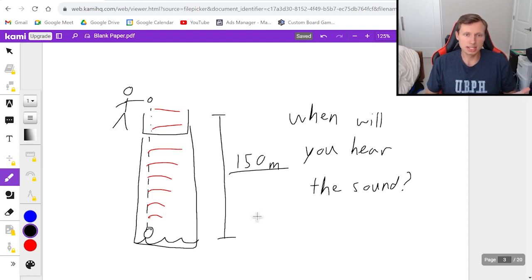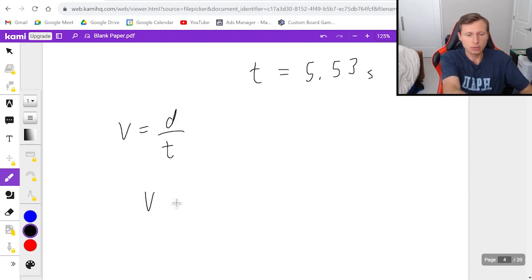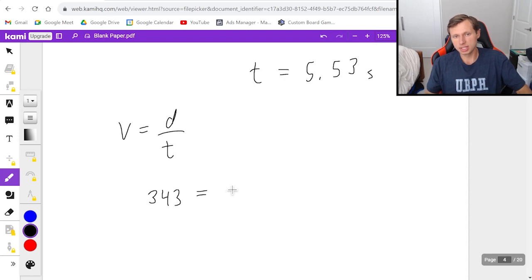The only reason you would double it is if instead of dropping a penny down the well, you screamed or yelled down the well because then it's a sound wave traveling down and then coming back up. So that means velocity, which we know it's 343 still because we're in air, equals the distance, which we just said was 150.